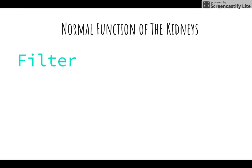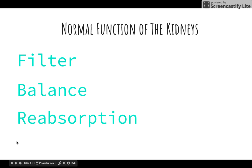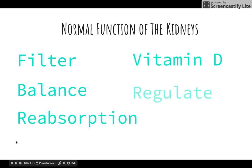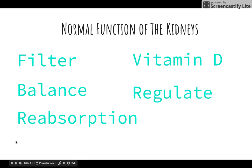Normal function of the kidneys: the kidneys filter out toxins, excess salt, and urea. They maintain water level balancing and the acid-base balance, regulate red blood cell production, reabsorb nutrients, and activate vitamin D.